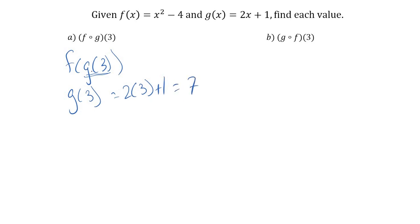So g of 3 is 7. So really, we're finding f of 7. And now I just go plug 7 in here. So 7 squared minus 4. 49 minus 4. Hey, I get 45. Okay, see how that works, I hope?